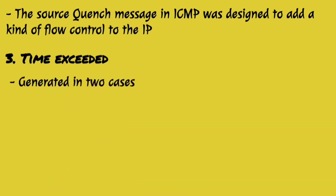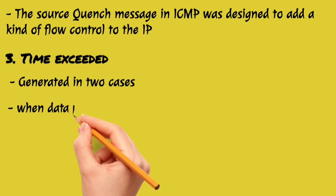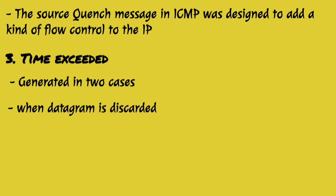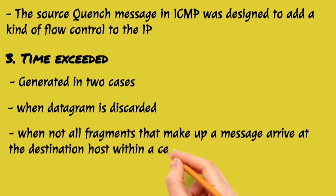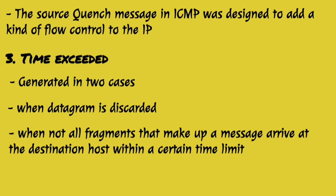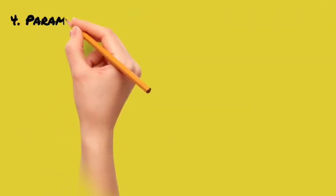The time exceeded message applies in two cases. When we send any data to a destination, the Time to Live field decreases by one. When the Time to Live field value reaches zero, all the data after that point will be discarded because the time limit has been exceeded. A time exceeded message is then sent back to the source.